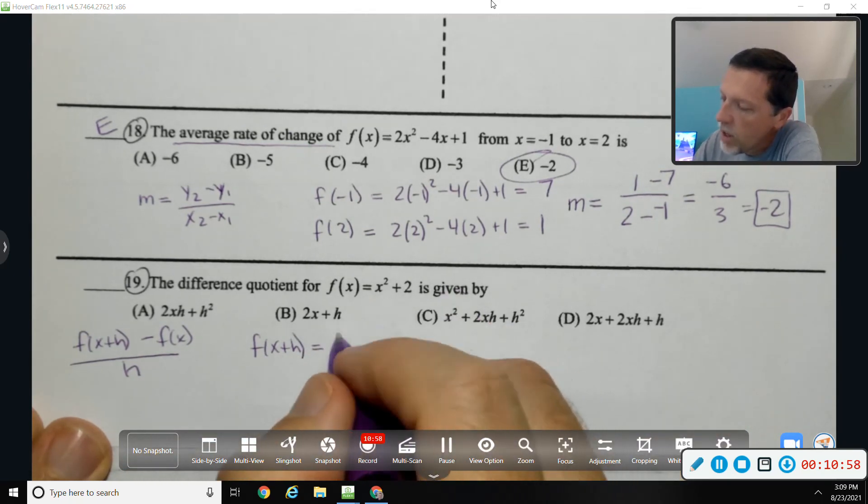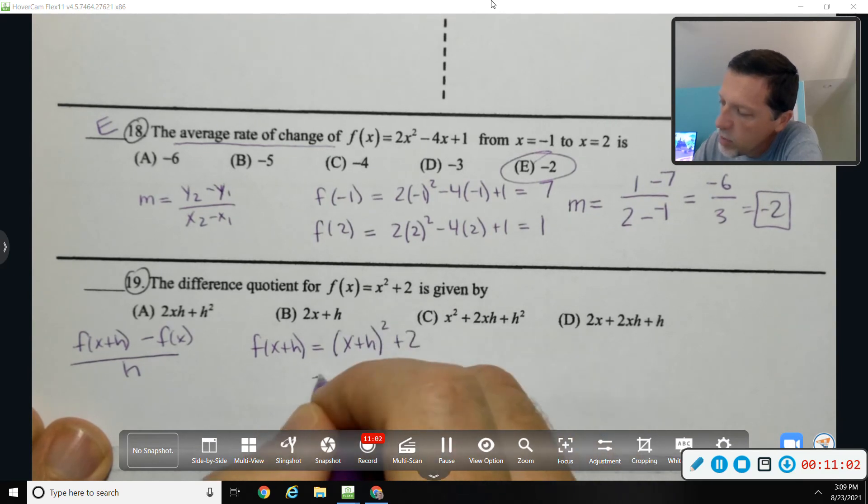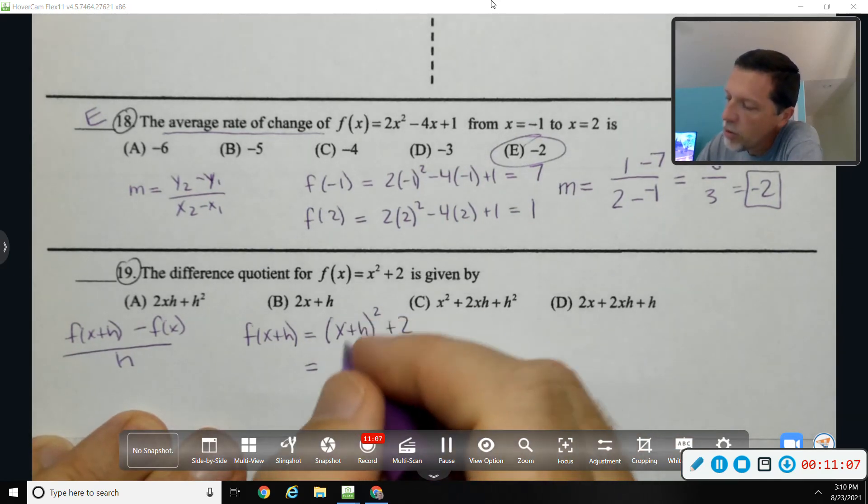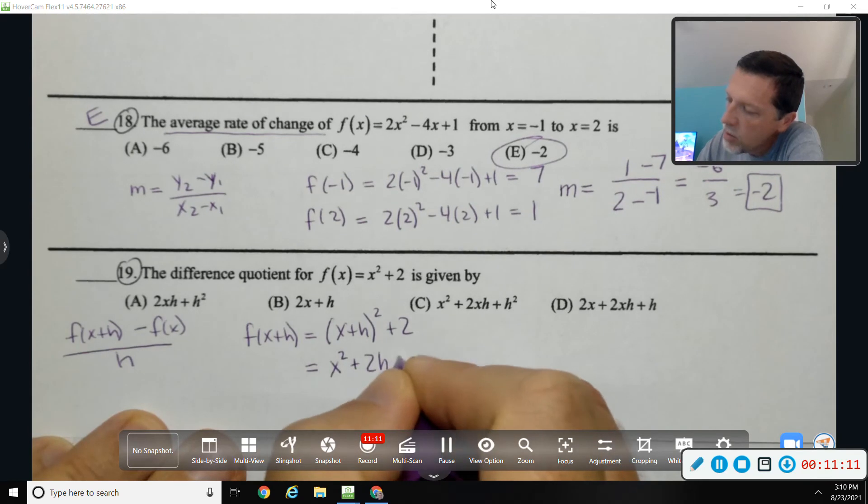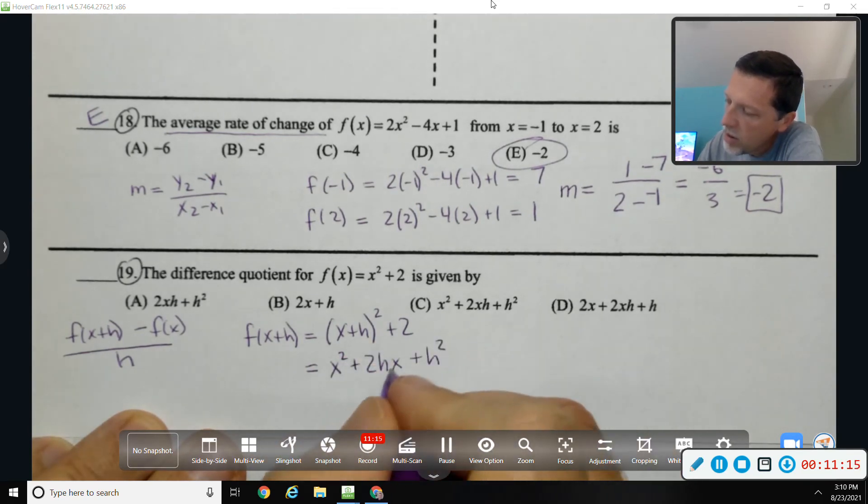So I'll use f of x. I'll plug in x plus h. Hopefully you've done this enough times where you can foil this or square that without having to write out all the terms. Some of you missed this on the quiz because you either forgot that term or you forgot there were two of them.